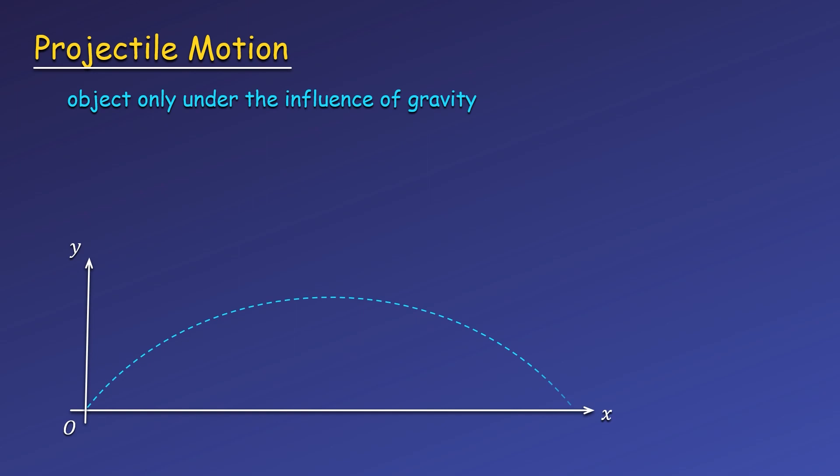This means when an object is launched upward at an angle, or launched horizontally, or launched downward at an angle, it is in projectile motion as long as it moves without interacting or touching anything. When we add in this horizontal motion, our projectile will move along a parabola, or in a parabolic path.